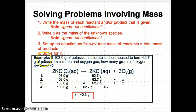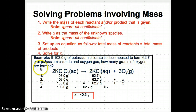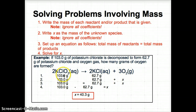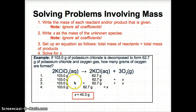Let's see that with an example. The question asks: if 103.0 grams of potassium chlorate (KClO3) is decomposed to form 62.7 grams of potassium chloride (KCl) and oxygen gas, how many grams of oxygen are formed? We write 103.0 grams under KClO3, 62.7 grams under KCl, and X under O2, since that's what we're solving for.